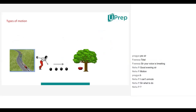For example: a passenger sitting in a moving train is in a state of motion with respect to the platform. But the co-passenger who is sitting in your train will be in a state of rest with respect to you.